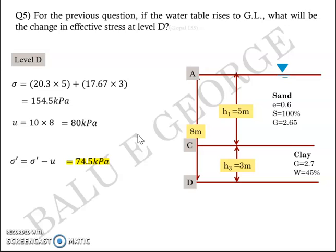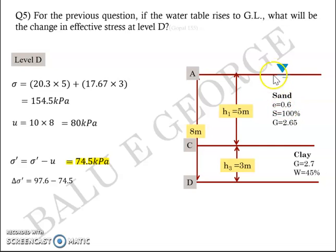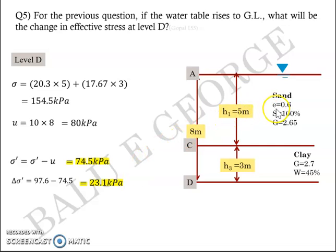There is a clear difference in effective stress at level D. When the water table was between A and C, σ' = 97.6 kPa. Now, with the water table at ground level, σ' = 74.5 kPa. The effective stress has decreased by 23.1 kPa. In summary, as the water table rises, the effective stress decreases.